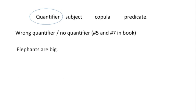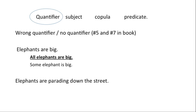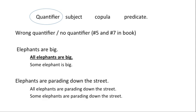The same thing happens when you have no quantifier at all. If I say 'elephants are big,' that could mean all elephants or some elephants, but if you think about it, it means all elephants are big. Yet if somebody says 'elephants are parading down the street,' they clearly just mean some elephants, not every single elephant ever. So sometimes 'elephants are big' means all, and sometimes 'elephants are parading down the street' means some. Wrong quantifier or no quantifier needs to be translated into the right kind — all or some — and it sort of depends on the context.